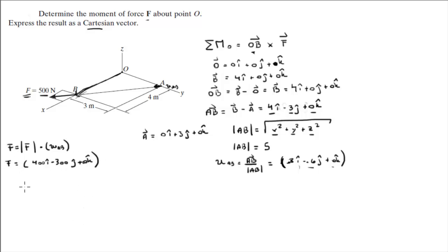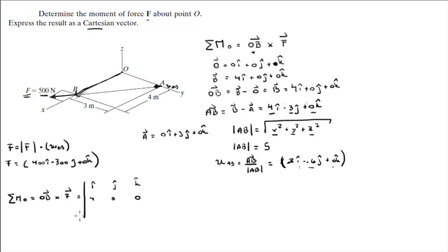Now that we have the Cartesian vector form of F, we can find the moment at point O, which is the cross product of OB cross F. This is calculated using the determinant matrix with i, j, k in the first row; OB components 4, 0, 0 in the second row; and F components 400, −300, 0 in the third row.